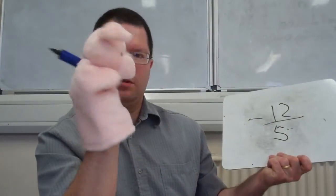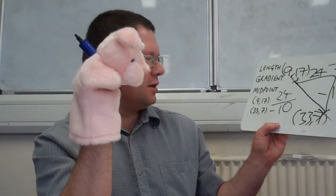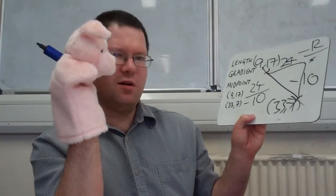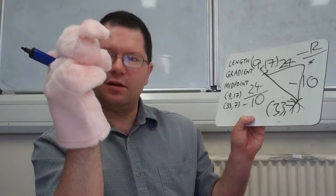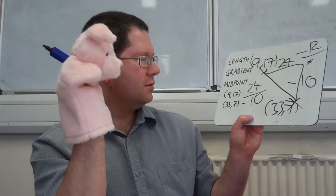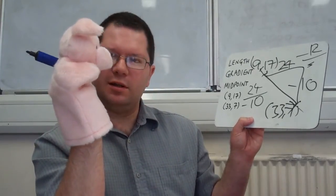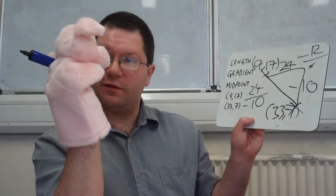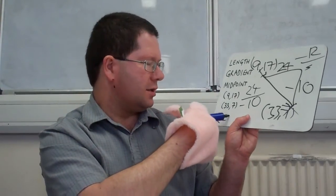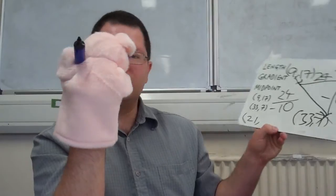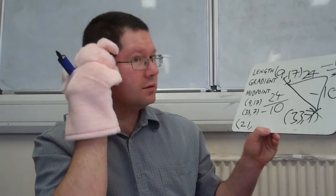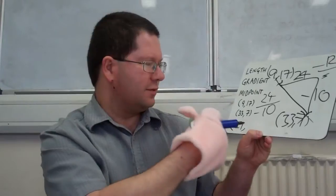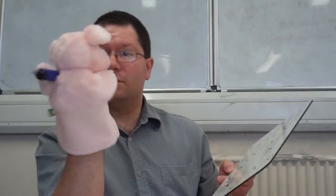And then finally, the midpoint. How do you work out? So, that'll be halfway between 9, 17 and 33, 7. So, 9 plus 33 is 42 and half of that is 21. That's good. And 17 plus 7 is 24. OK, and you can halve that, 12. OK. So, what next?